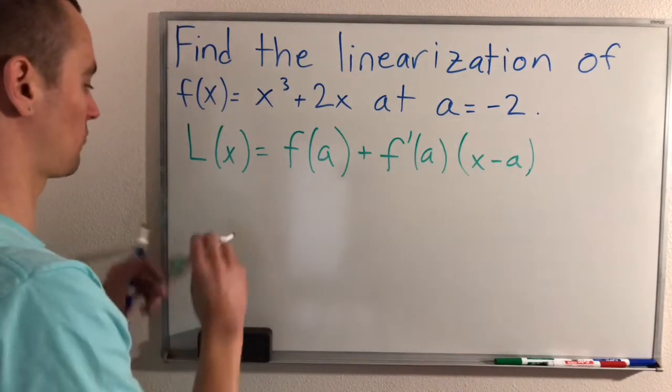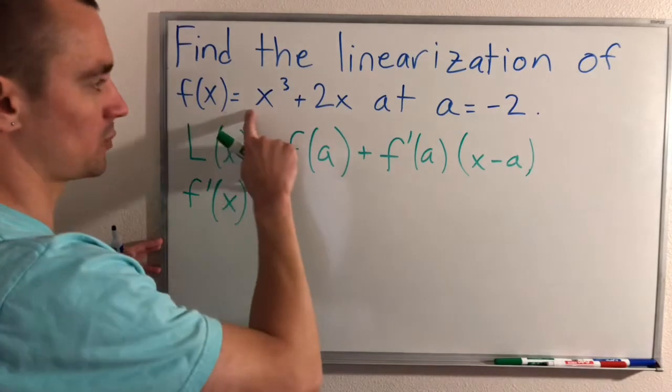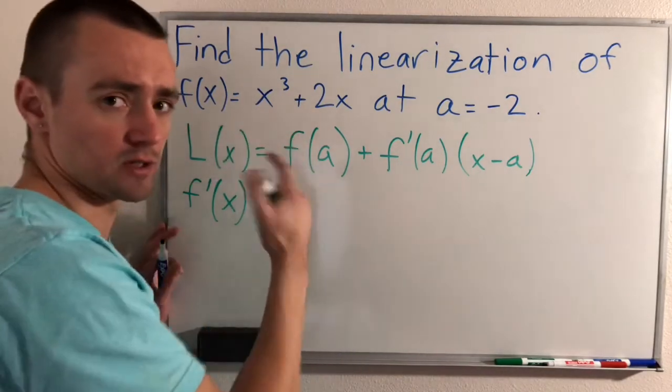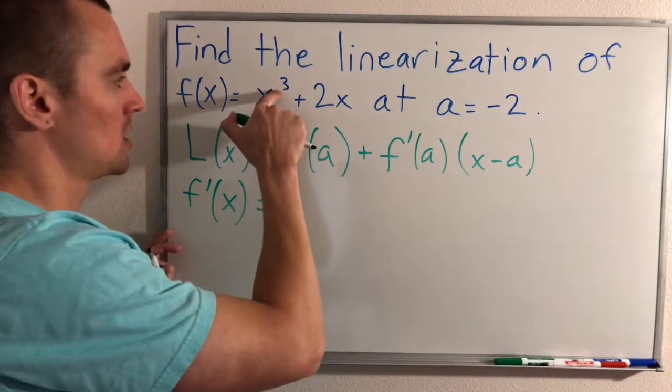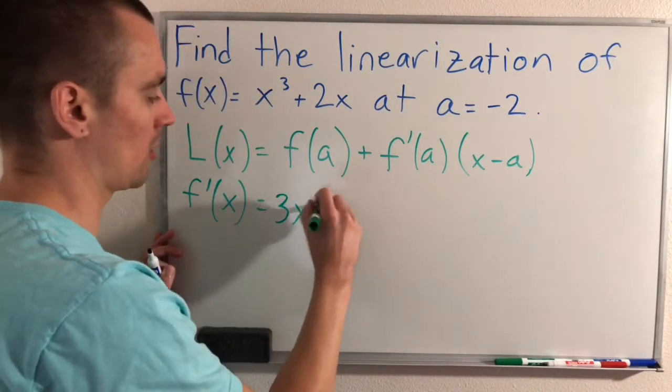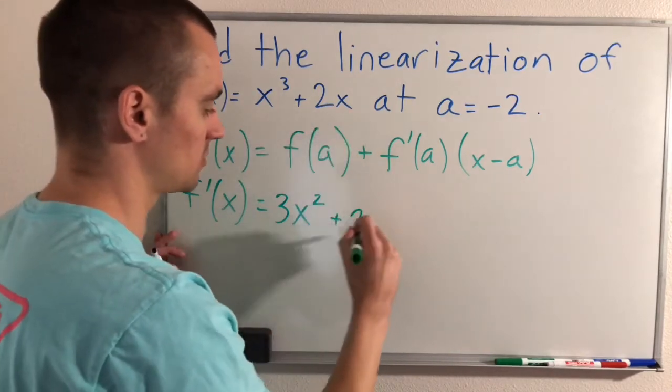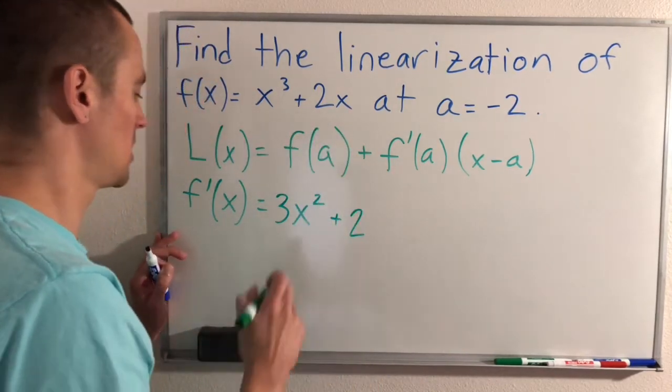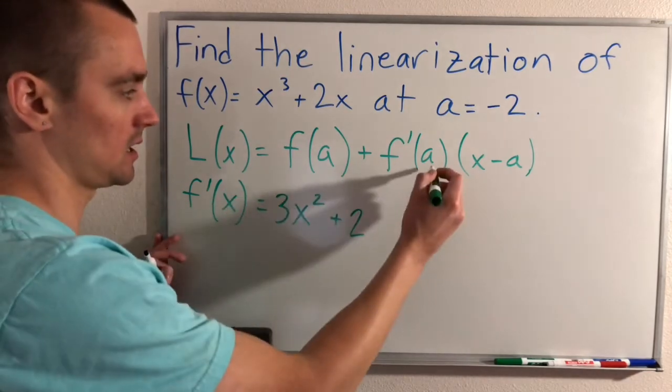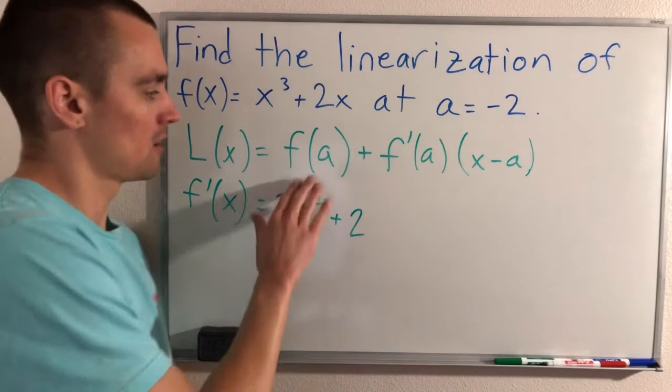So first of all, we want to find f'(x), which in this case is pretty straightforward. We're just going to be able to do that using the power rule. So bring the 3 down in front, keep our x there, lower the power by 1, 3 minus 1 is 2, and then the derivative of 2x is just 2. The x just falls off.